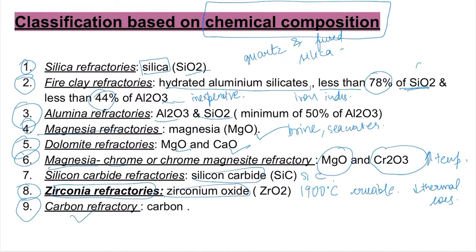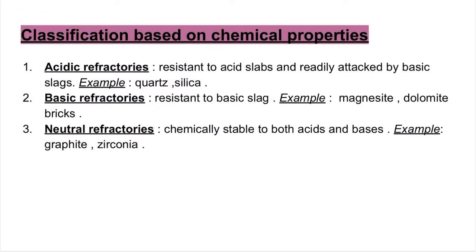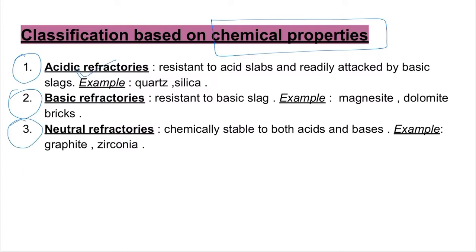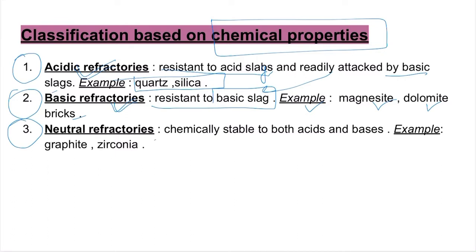Zirconia refractories also do not react readily with liquid metals. The last classification by chemical composition is carbon refractories, which comprise carbon. We also have a classification based on chemical properties: acidic refractories are resistant to acid slags but readily attacked by basic slags — examples are quartz and silica. Basic refractories are resistant to basic slags but readily attacked by acidic slags — examples are magnesite, dolomite, and bricks. Neutral refractories are chemically stable to both acids and bases — examples are graphite and zirconia.